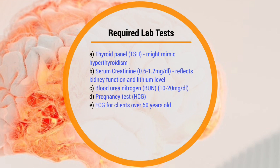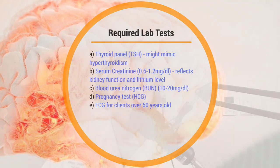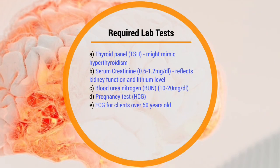Creatinine and BUN both reflect kidney function and lithium levels. Blood urea nitrogen, or BUN, is 10 to 20. Before you prescribe lithium — or in fact, before you prescribe any antipsychotics or mood stabilizers — for females ages 12 to 50, you need to get a pregnancy test, also known as HCG. For those over 50 years old, you need to get an EKG.